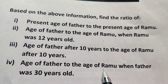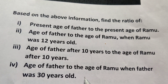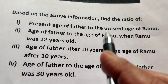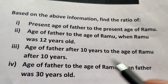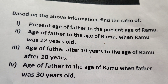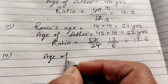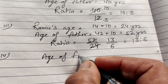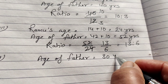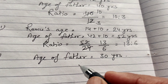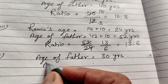The last part: find the ratio of the age of father to the age of Ramu when father was 30 years old. The present age of father is 42, and 30 years means 12 years less than the present age. So we subtract 12 from Ramu's age as well.